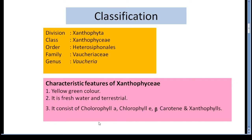In many genera, the cell walls are in the form of two equal or unequal overlapping halves. The cells in motile genera have two unequal flagella attached to the anterior end — one flagellum tinsel type and the other whiplash type. The pigments are located in discoid chromatophores and consist of chlorophyll A, chlorophyll E, beta-carotene and xanthophylls. Chlorophyll B is absent. The dominant pigment is xanthophyll, diadinoxanthin, which provides the cell its characteristic yellow-green color.